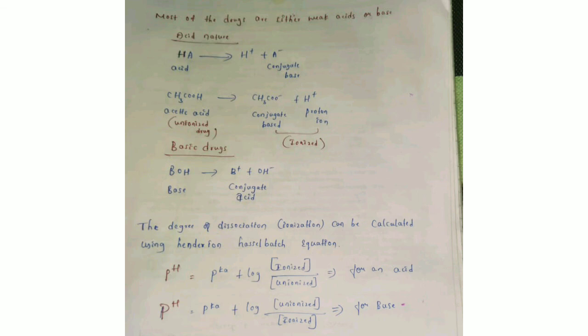Most drugs are either weak acids or weak bases. Taking acetic acid as an example of a weak acid: when it dissociates, it forms a conjugate base and a proton, converting from unionized to ionized form. The degree of dissociation can be calculated using the Henderson-Hasselbalch equation. For an acid: pH = pKa + log([ionized] / [unionized]). For a base: pH = pKa + log([unionized] / [ionized]). This is all about ionization.